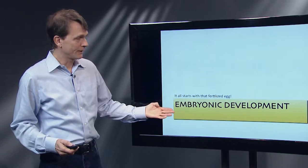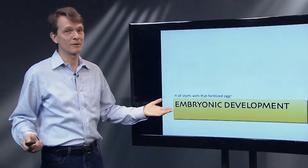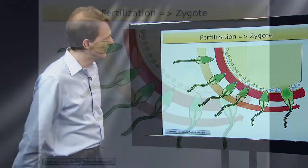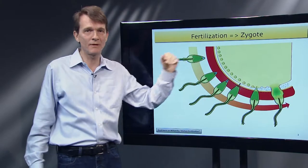First, we're going to talk about embryonic development, because everything starts with that fertilized egg. There's the sperm going through the membranes and eventually fusing with the egg's cytoplasm to deliver its genetic material into the egg. Exactly how the genetic material works here, we're going to talk about later. But I wanted to start here because this is the first cell.